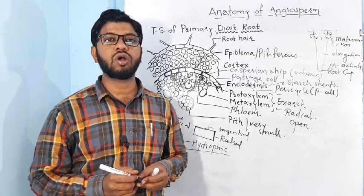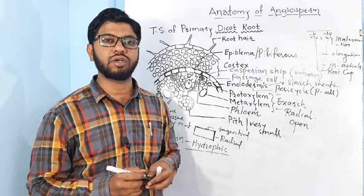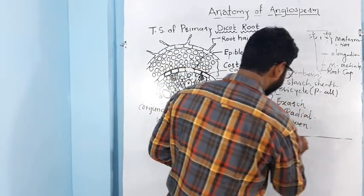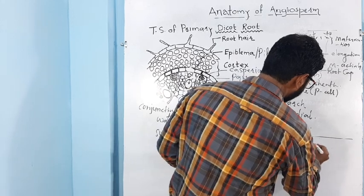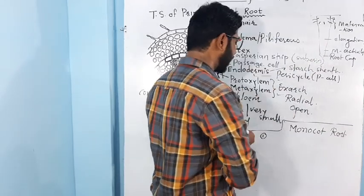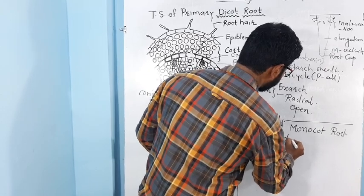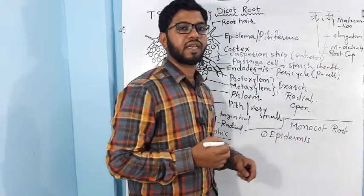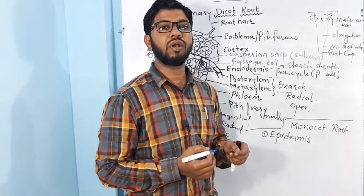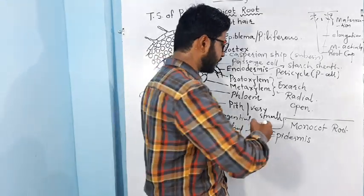Monocot root shows maximum similarities with the internal structure of dicot root. For example, in monocot root, epidermis is very similar to the epidermis of dicot root. Epidermis is single-layered, compactly attached rectangular parenchyma cells, and tubular root hairs arise as extensions of epidermal cells.